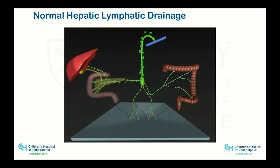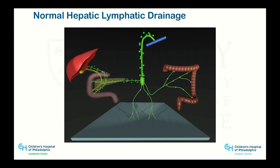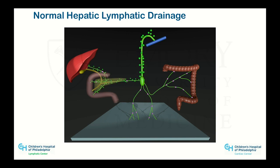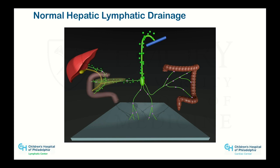Normal hepatic lymphatic drainage flows centrally toward the thoracic duct, with possible other connections. Parts of the liver lobes can drain down toward the retroperitoneum and connect to the cisterna chyli. Parts of the liver — possibly one lobe — can drain directly upward and connect to the right-sided duct, though we don't see that in most people. The duodenum sits right next to the liver, so it makes perfect anatomical sense for duodenal and liver lymphatic channels to be interconnected and drain together.